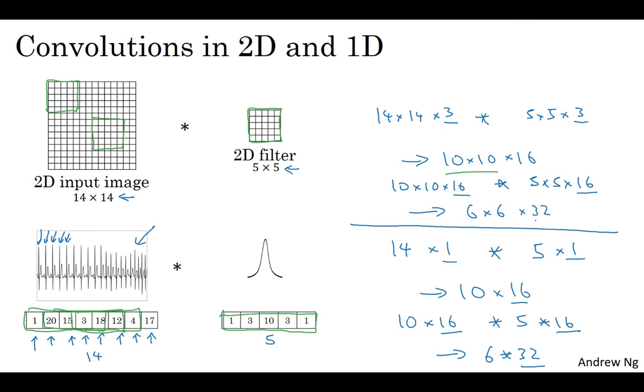All of these ideas apply also to 1D data, where you can have the same feature detector applied to a variety of positions. For example, to detect the different heartbeats in an EKG signal, but to use the same set of features to detect the heartbeats even at different positions along the time series. ConvNets can be used even on 1D data. For a lot of 1D data applications, you actually use a recurrent neural network, which you'll learn about in the next course. But some people also try using ConvNets in these problems. In the next course on sequence models, where we'll talk about recurrent neural networks and LSTM and other models like that, we'll talk about the pros and cons of using 1D ConvNets versus some of those other models that are explicitly designed for sequence data. That's the generalization from 2D to 1D. How about 3D data?